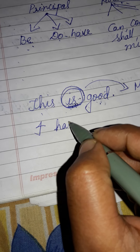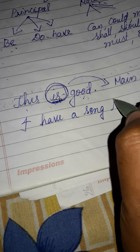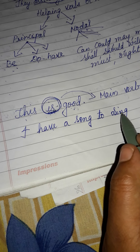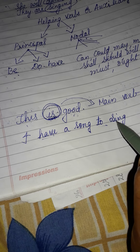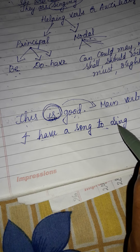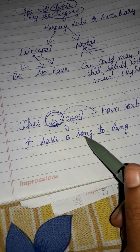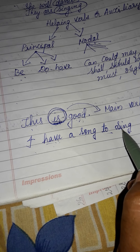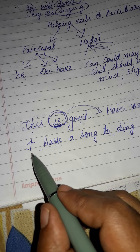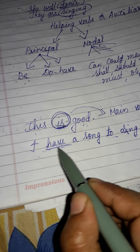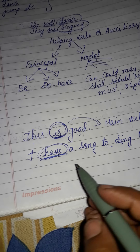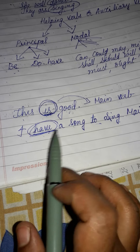One more example: 'I have a song to sing.' Here, sing is indeed a verb, but you have to understand the sentence. 'I have a song to sing' means 'mere paas ek gaana hai gaane ke liye' — sing is not acting as the main action verb here. So 'have' in this sentence is acting as the main verb, because it is telling about the mood.